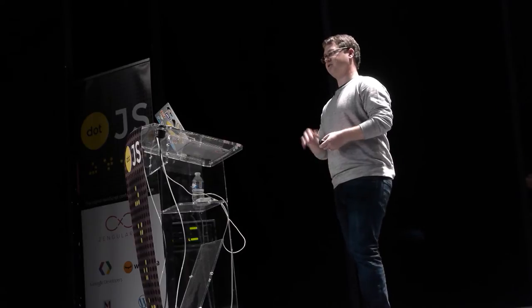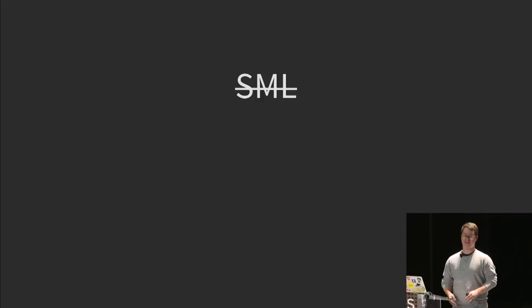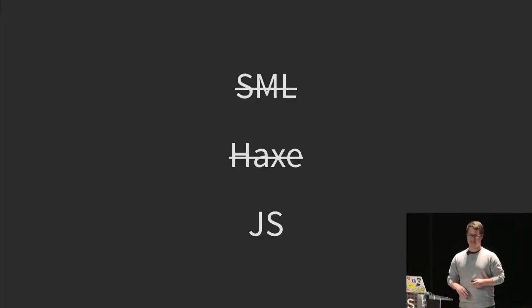He wanted to clean this up, so he took inspiration from server-side rendering and functional programming. It took a couple of attempts. The first version of React was actually written in SML — a purely functional academic programming language. The problem with SML is there's no concept of a DOM or a browser, so you can't really use it. But out of it, the core concepts of this data relationship came. Next he used a framework called Hacks, which didn't end up working out. And eventually, JavaScript.